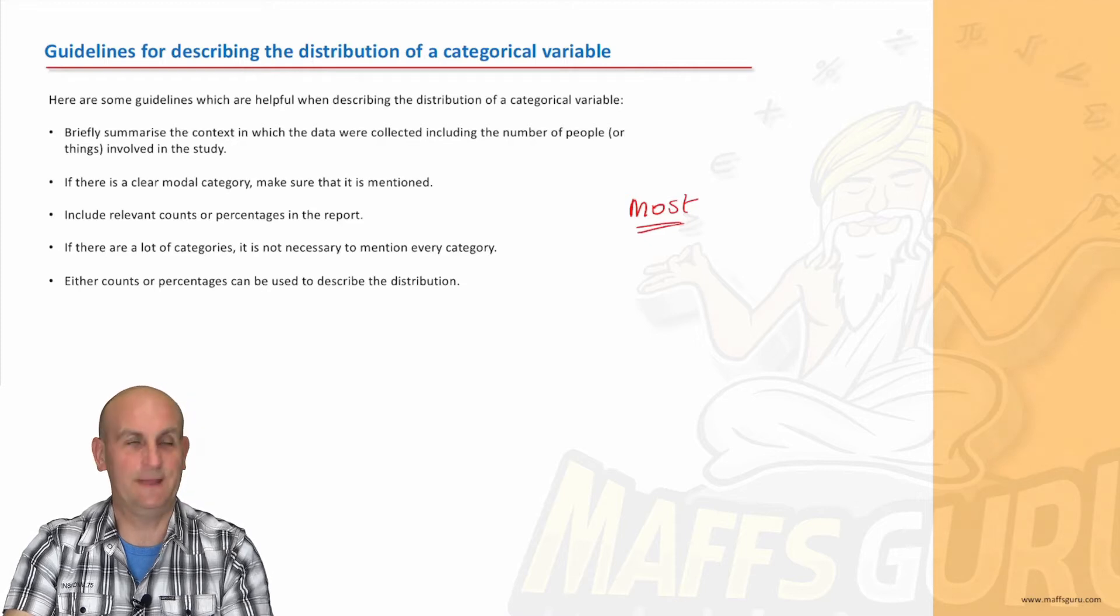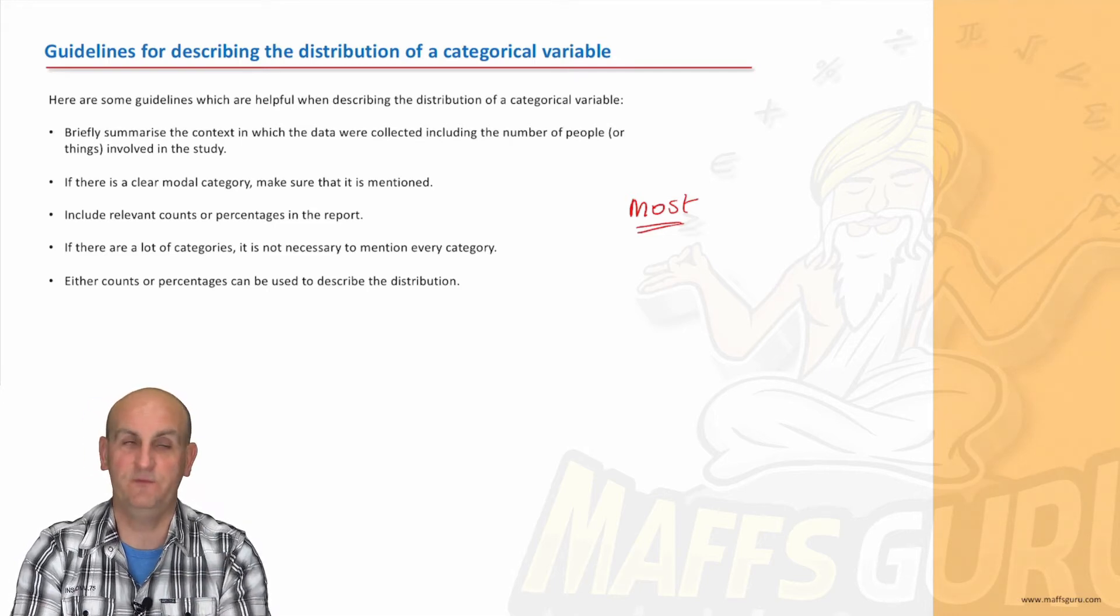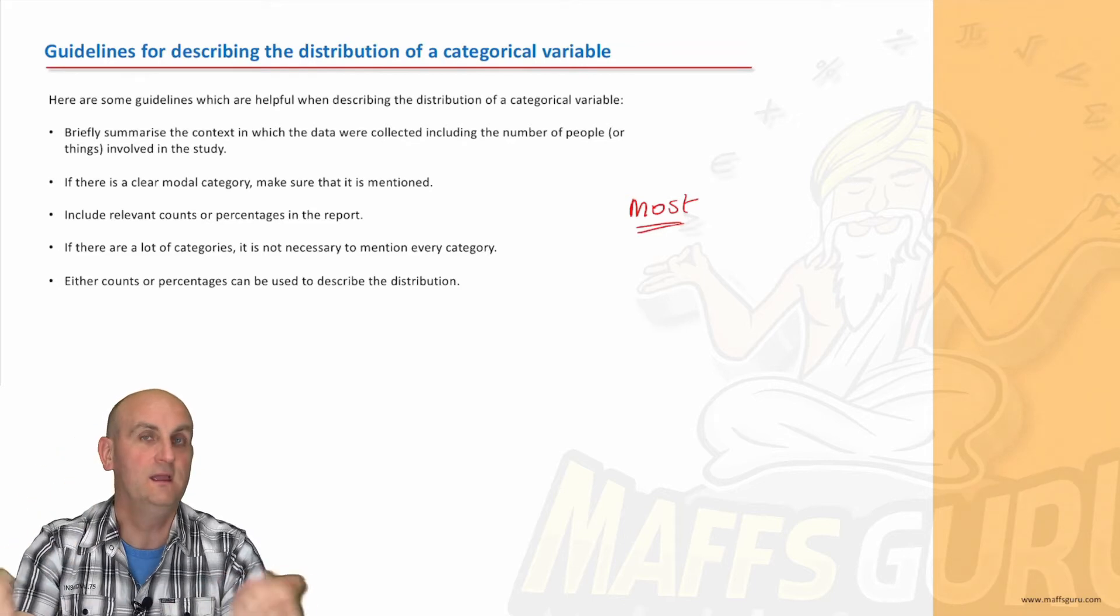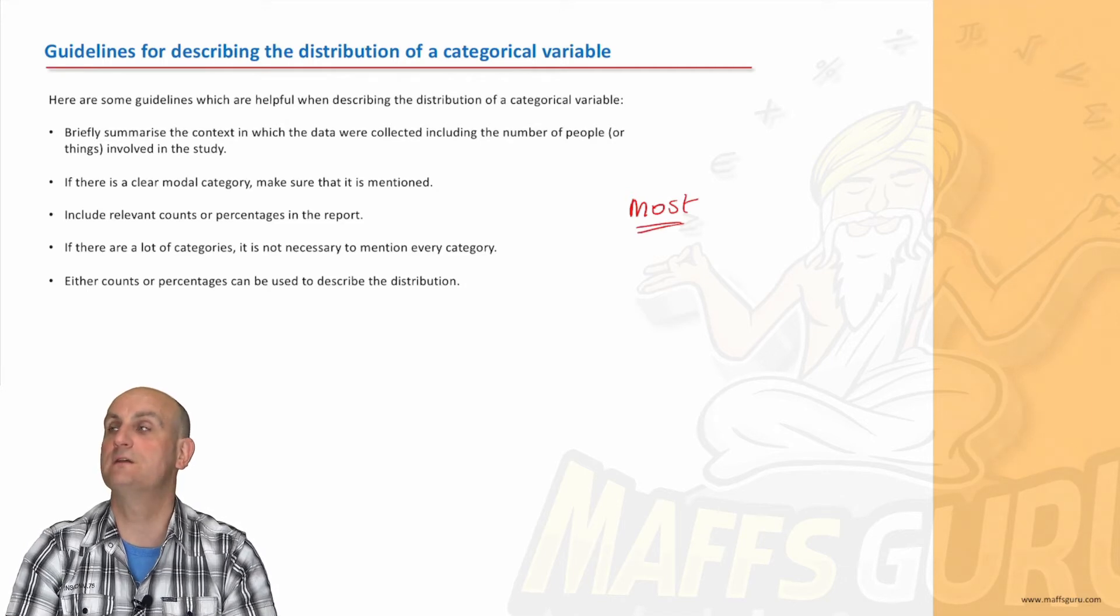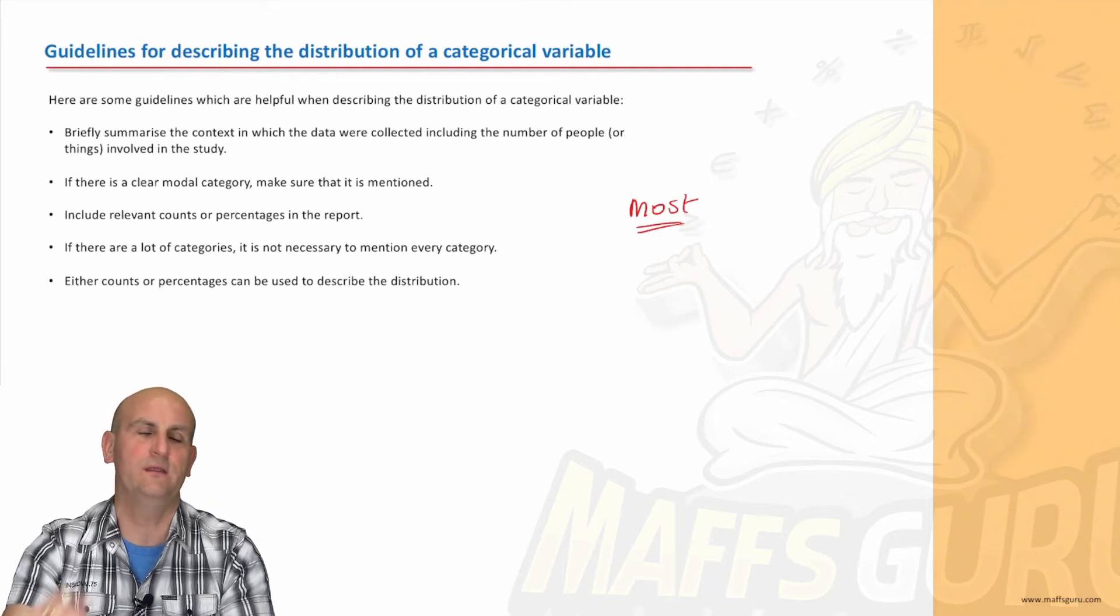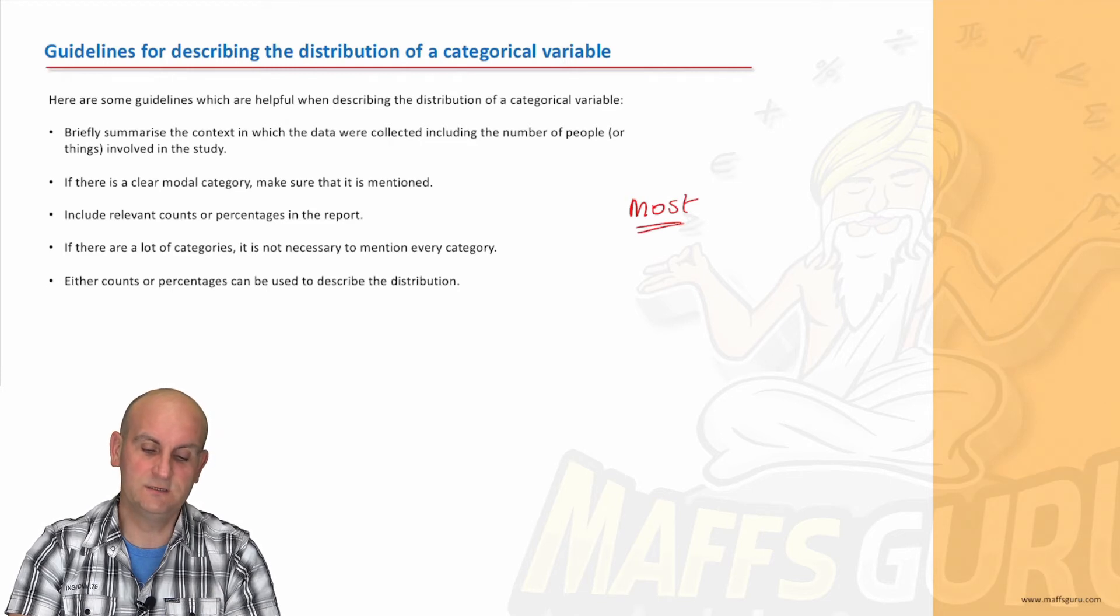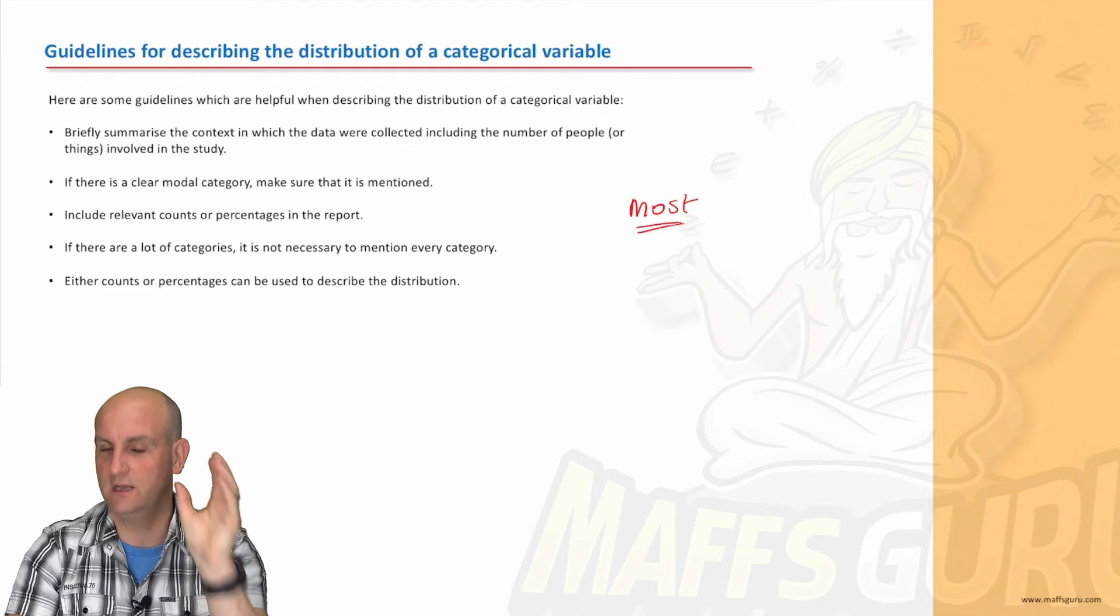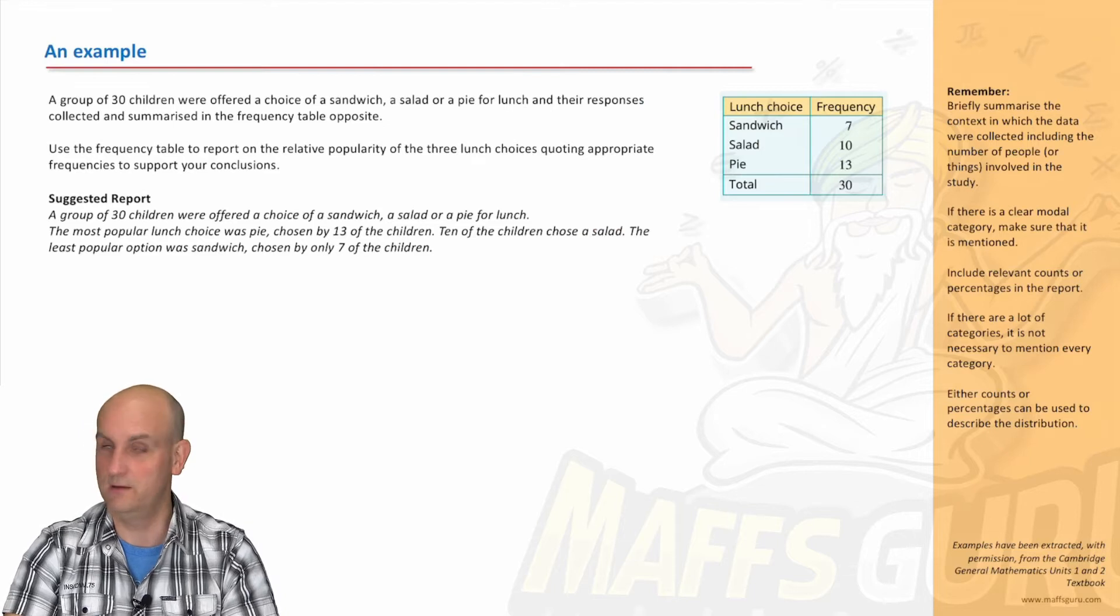Include relevant counts or percentages. Again, don't ever write a mathematical report without including numbers. If you may as well not bother, if there's no numbers in it, if you put the height, if you put the modal category in without the height, you may as well rip the piece of paper up, throw it away and go to Maccas. Apply for a job. If there's a lot of categories, it's not necessary to mention every single category. Some people think those eight bars, got to talk about all eight bars. You don't. You talk about three, maybe four of them if you need to, maybe two or three. Doesn't really matter. Either counts or percentages can be used to describe the distribution. Again, it doesn't matter. If you've got a frequency, you just talk about the frequency. If you've got percentage frequency, talk about percentage frequency. Don't do both.